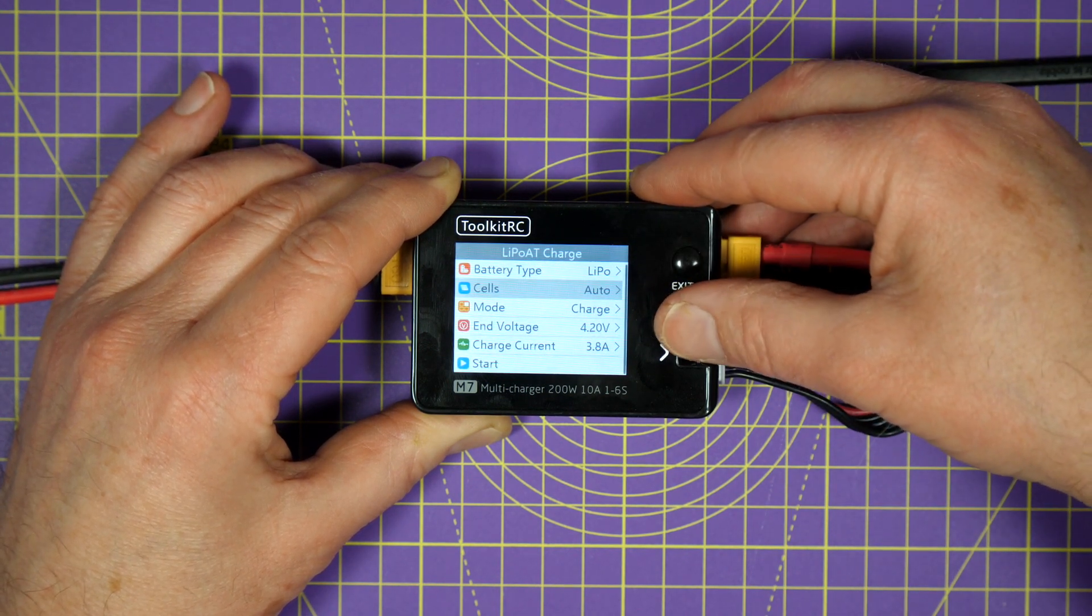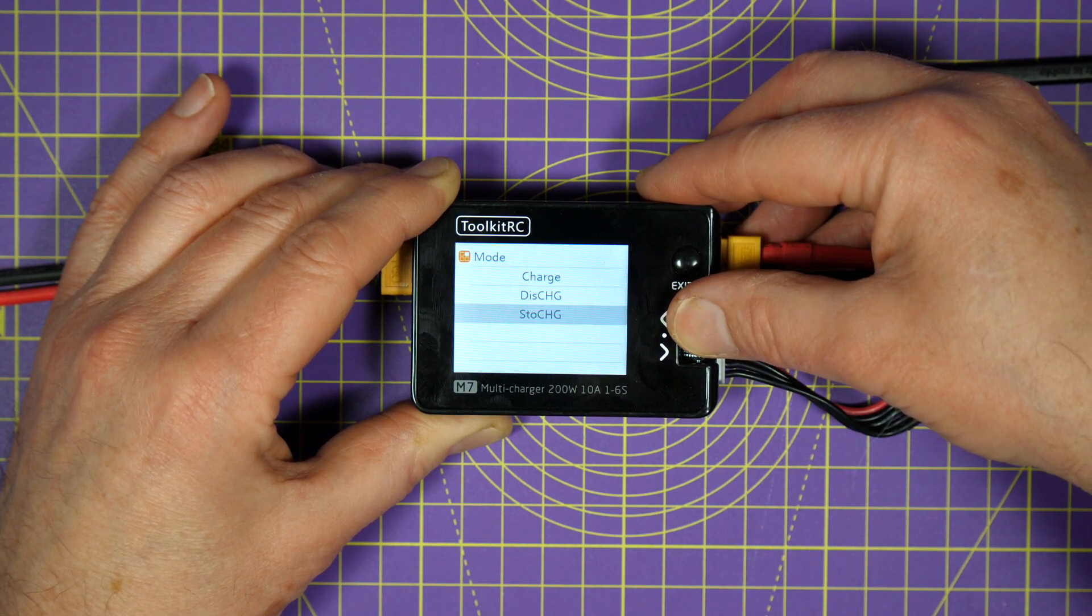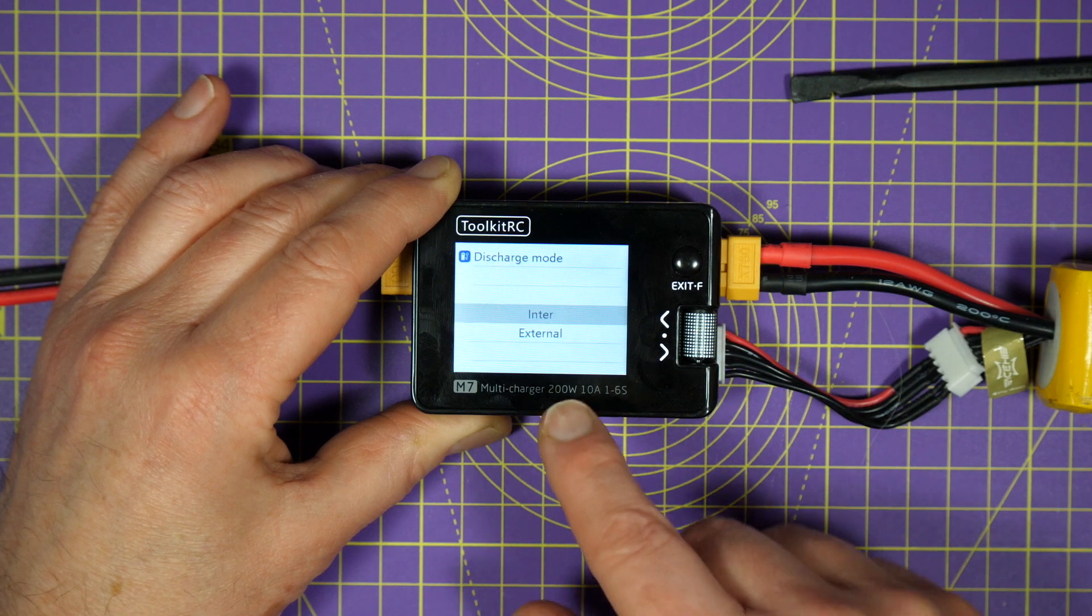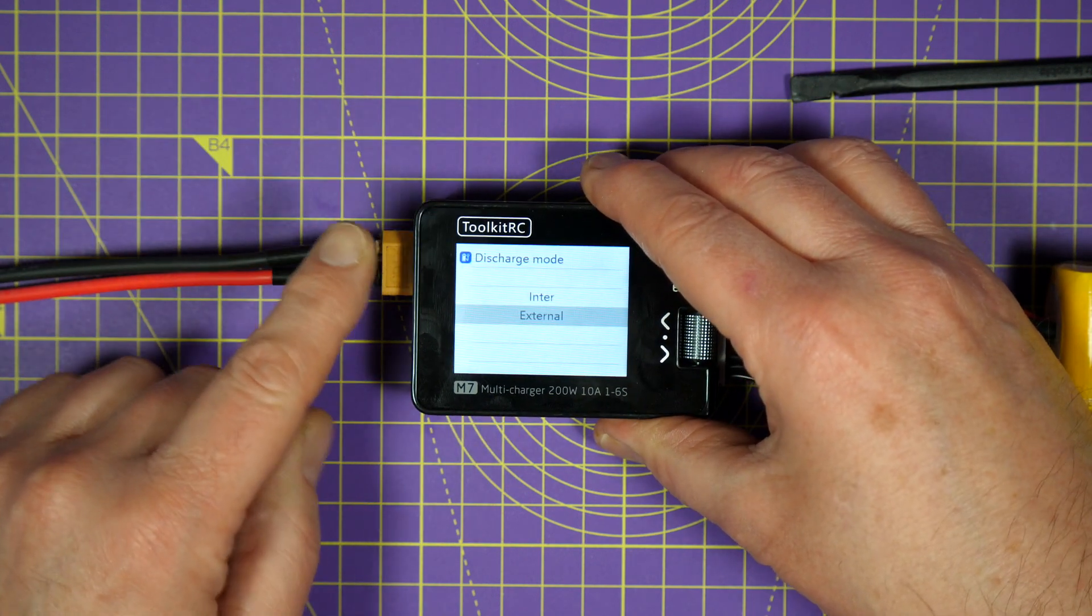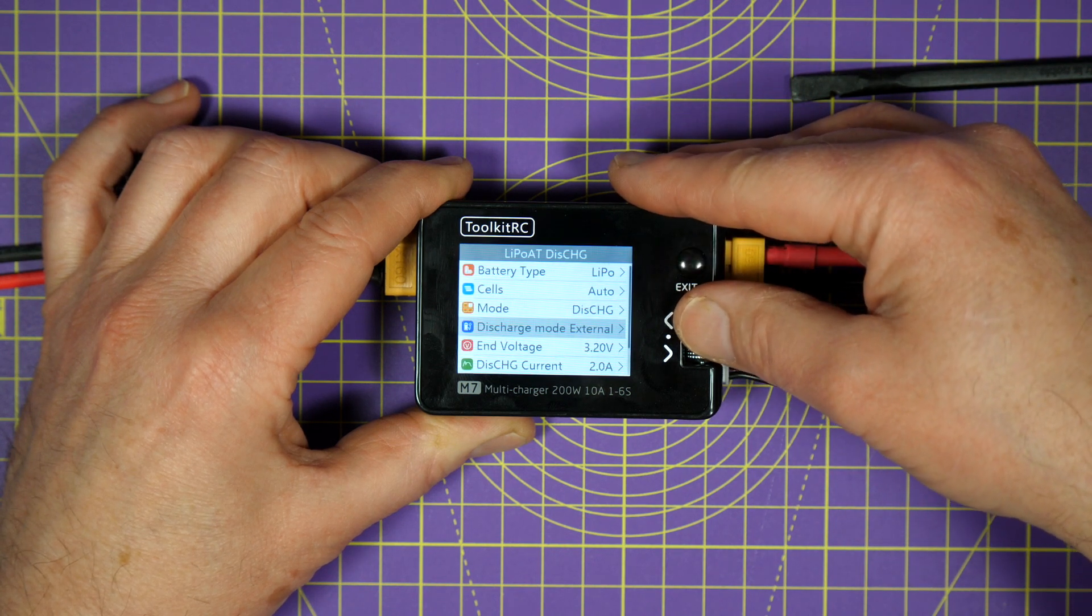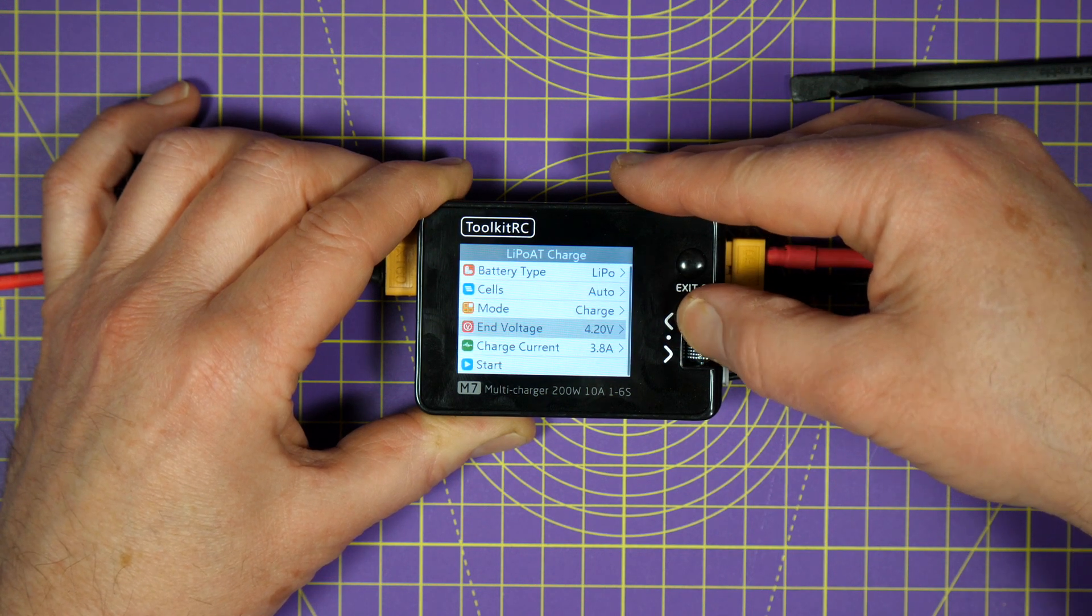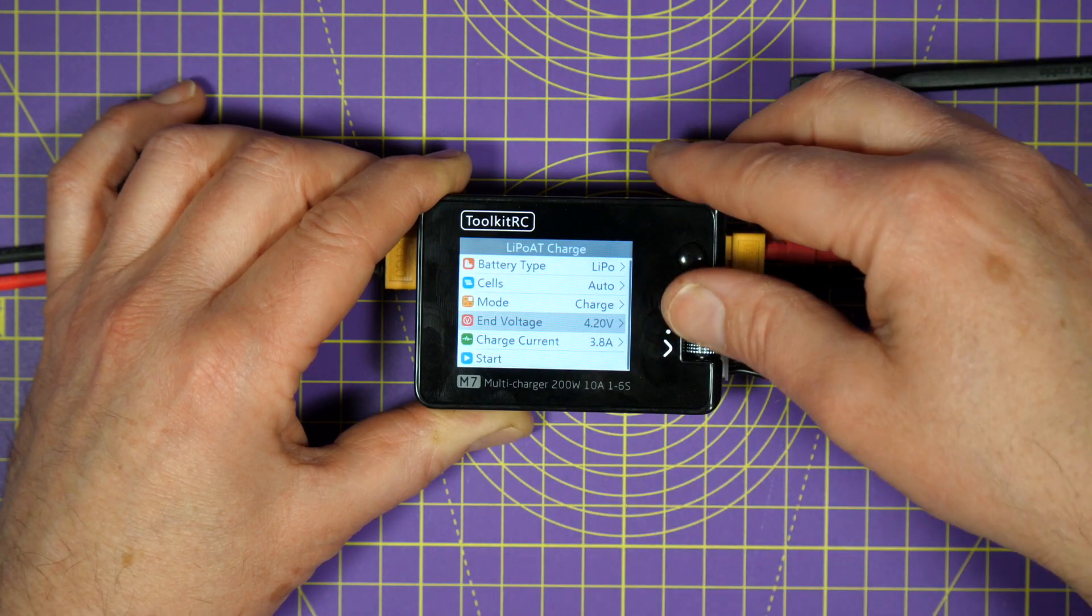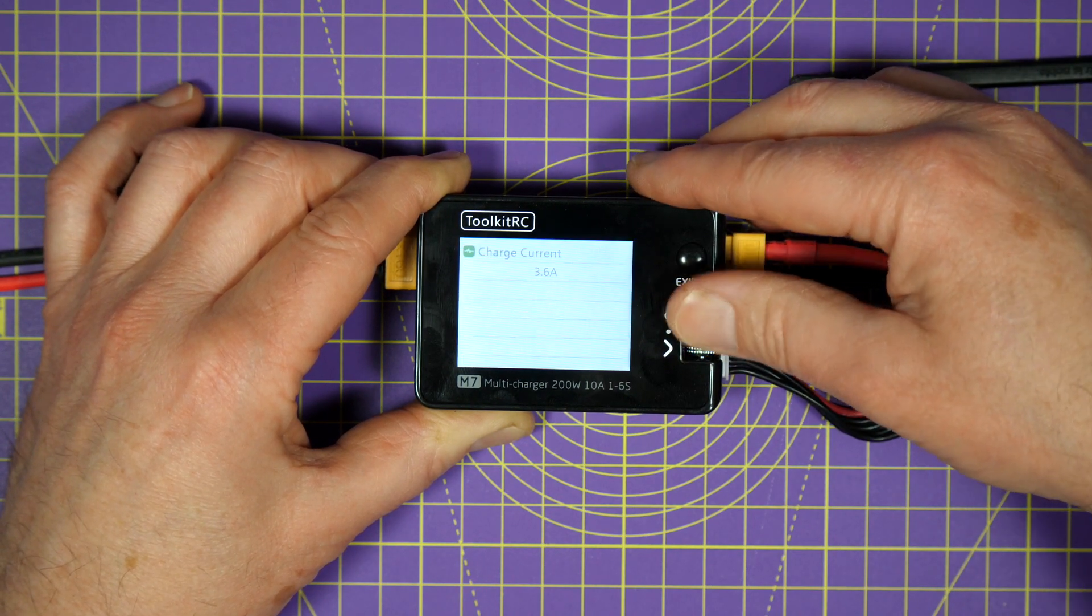So let's go back and choose LiPo because that's what we've got over here. It'll auto-detect the number of cells. You can put it into charge mode, discharge mode, or storage. Discharge mode is interesting. It's got a number of modes, so you can discharge this internally or you can discharge it via an external load which you connect here. Very clever. Let's get rid of that and go into charge mode. You can change the end voltage if you want to tweak it around a bit, but 4.2 is normal and that's the default for LiPos. You can select the charge current. This is 1300, so let's go.